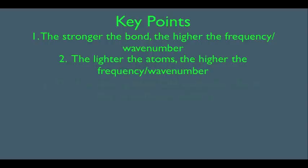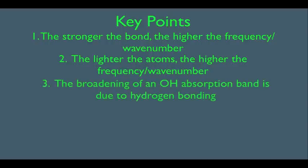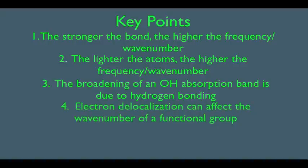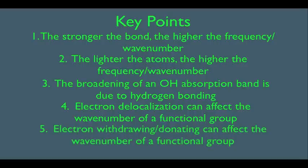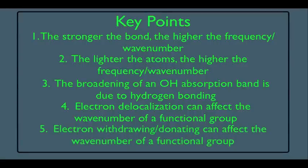Number three, the broadening of an OH absorption band is due to hydrogen bonding. Number four, electron delocalization — that is resonance — can affect the wavenumber of a functional group. And lastly, electron withdrawing or donating can also affect the wavenumber of a functional group.